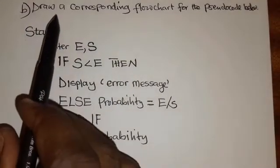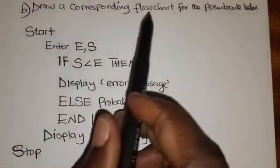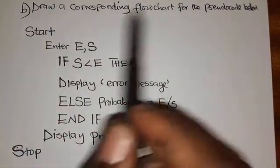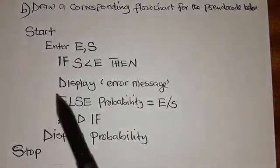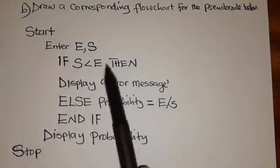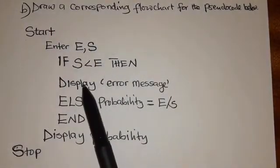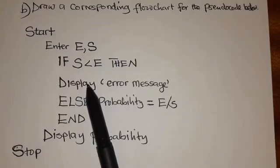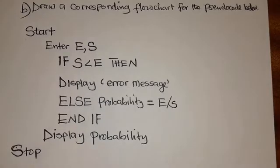So we have simplified — we have reduced this big expression to q over 5p. Part b says: draw a corresponding flowchart for the pseudocode below. We have been given a pseudocode and they want us to transform it into a flowchart.